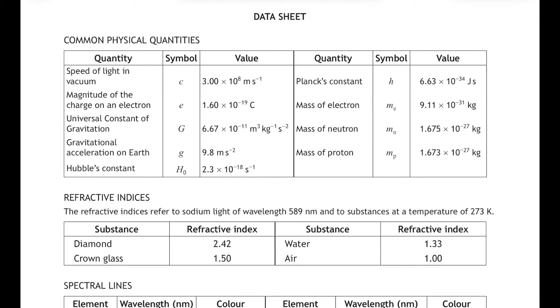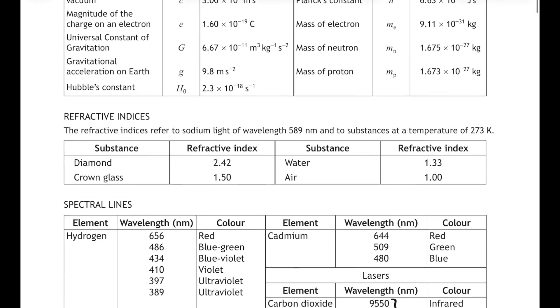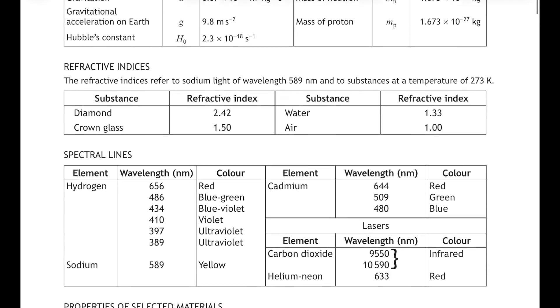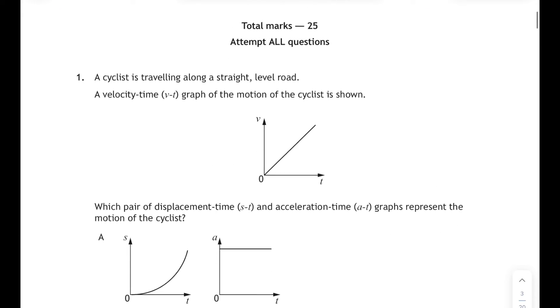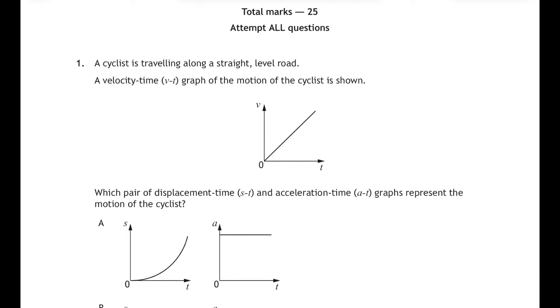First thing you see when you open the paper is the data sheet that contains all the numbers that you might need for some of the questions as you work through the paper. Also make sure you've got your own copy of the relationship sheet. Now you might want to pause this and make sure that you have a go at the questions first before coming back and having a look at this walkthrough.